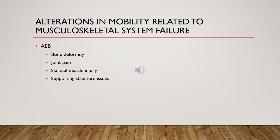Some of the things we talk about today definitely affect multi-system disorders. Not only our musculoskeletal system, but you're going to see lung and liver involvement and also circulation or tissue perfusion — so I want you to be thinking about that. This slide talks about alteration in mobility related to musculoskeletal system failure, as evidenced by bone deformity, joint pain, skeletal muscle injury, and supporting structure issues.